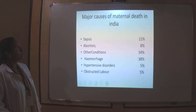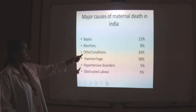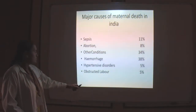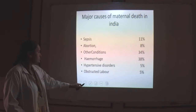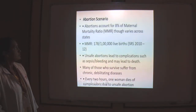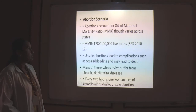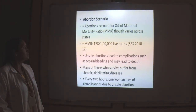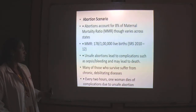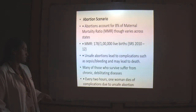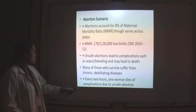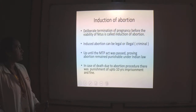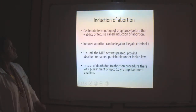If you see the major causes of maternal death in India, abortion comprises 8% of causes of maternal death. That is a preventable cause. Unsafe abortion leads to complications such as sepsis and bleeding, which may lead to death, or if a woman survives, she suffers from chronic illnesses like Sheehan's syndrome. So that can be prevented by the legalization of abortion.